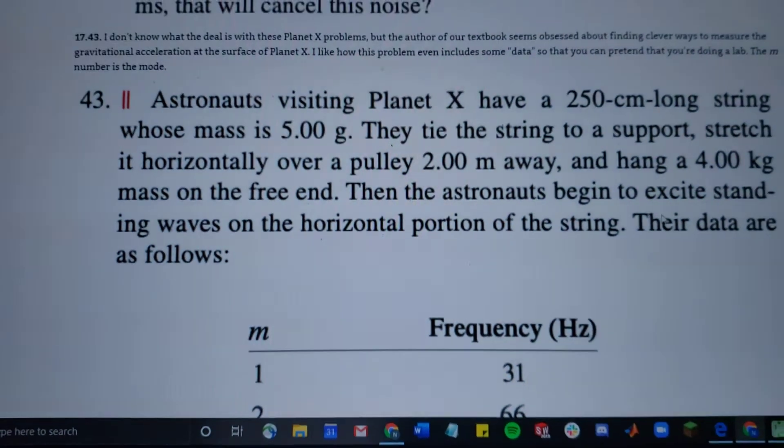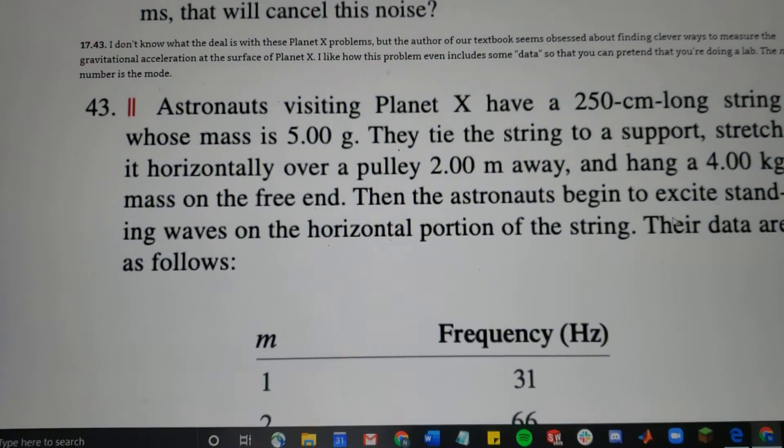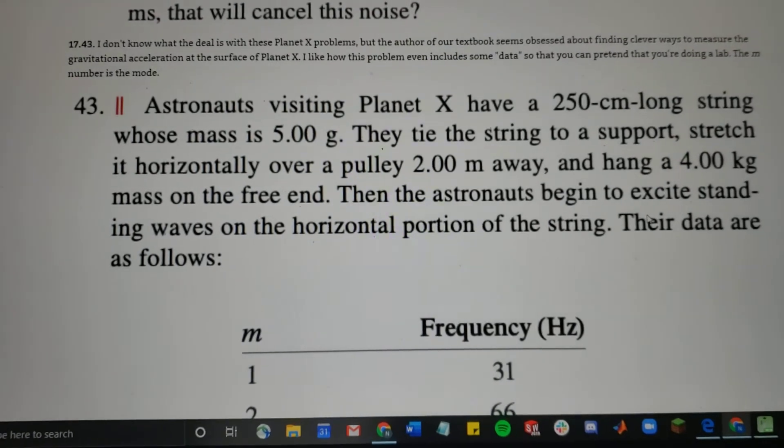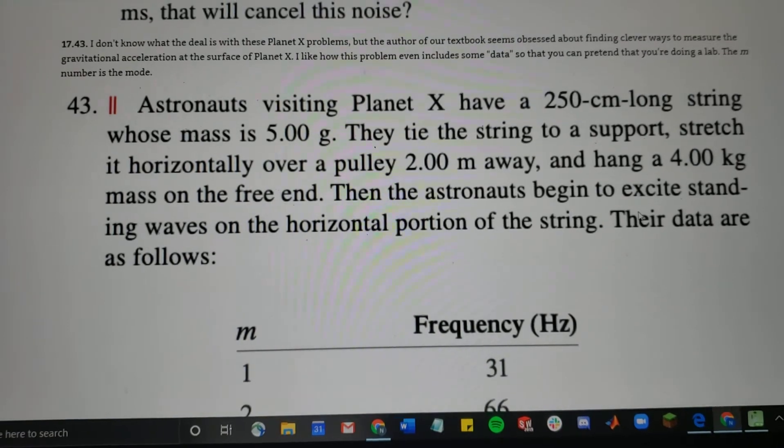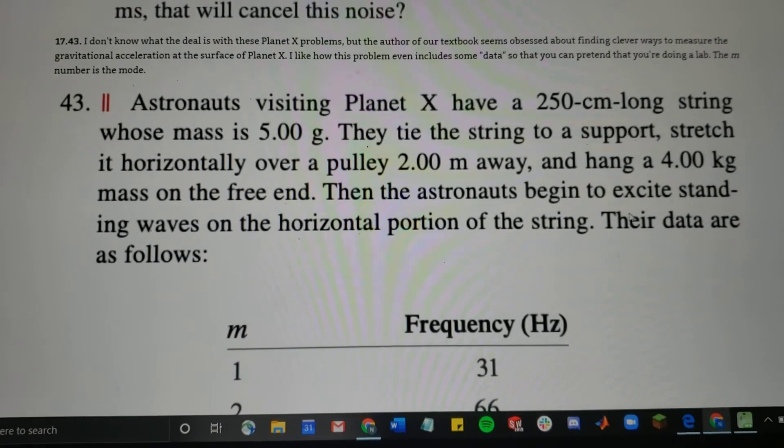Alright guys, this is problem 17.43 for week 5. The problem says astronauts visiting planet X have a 250 centimeter long string whose mass is 5 grams. They tie the string to a support, stretch it horizontally over a pulley 2 meters away, and hang a 4 kilogram mass on the free end.